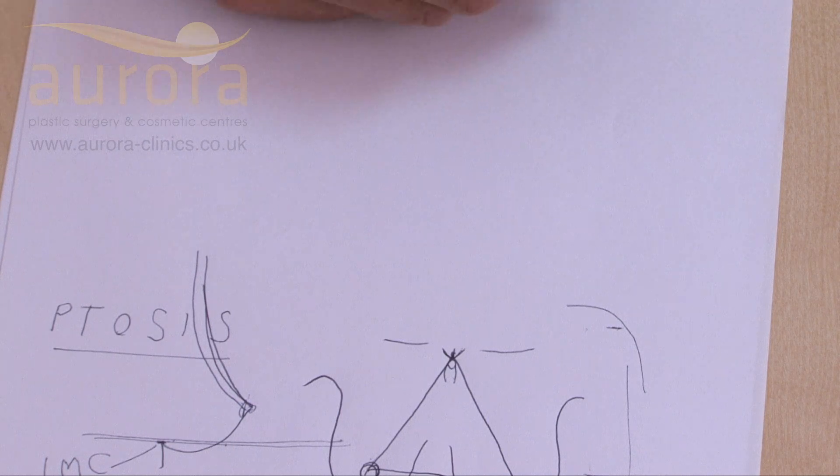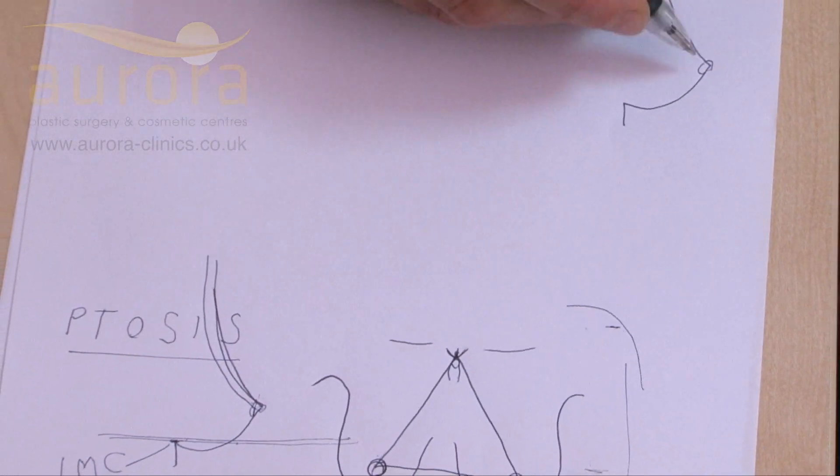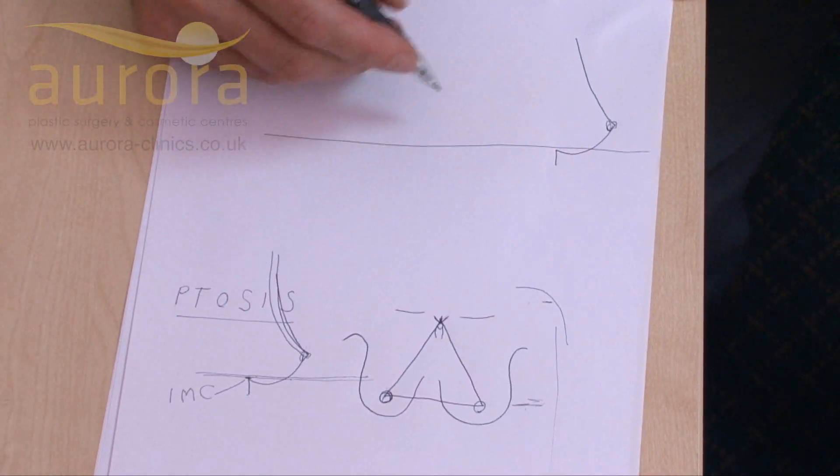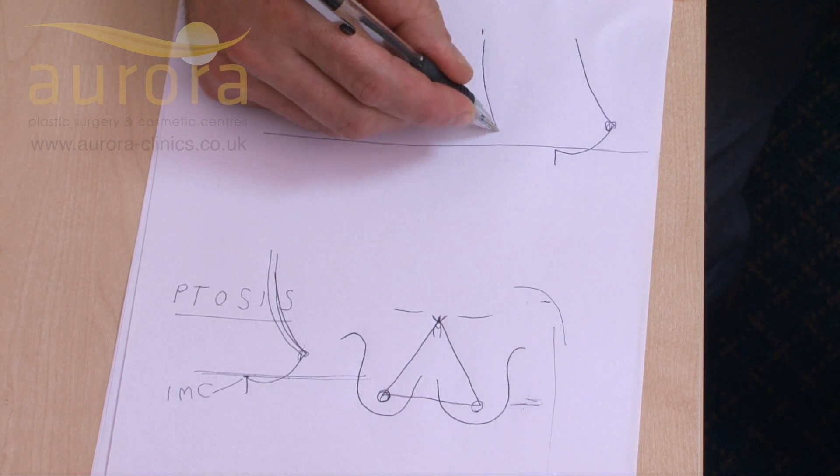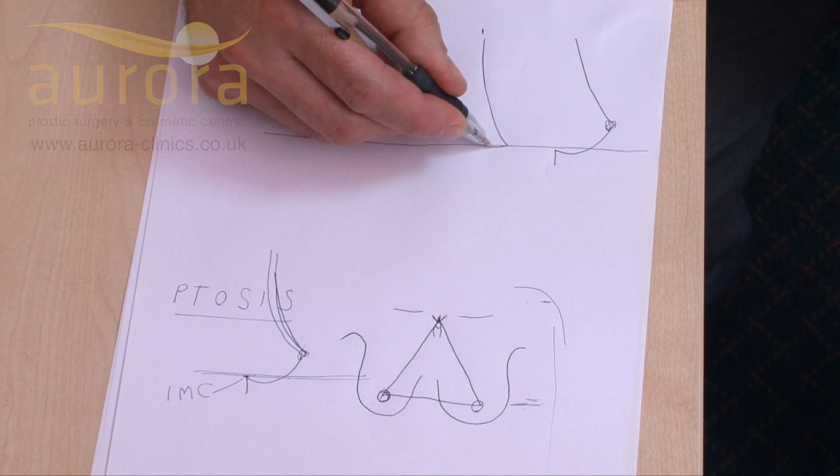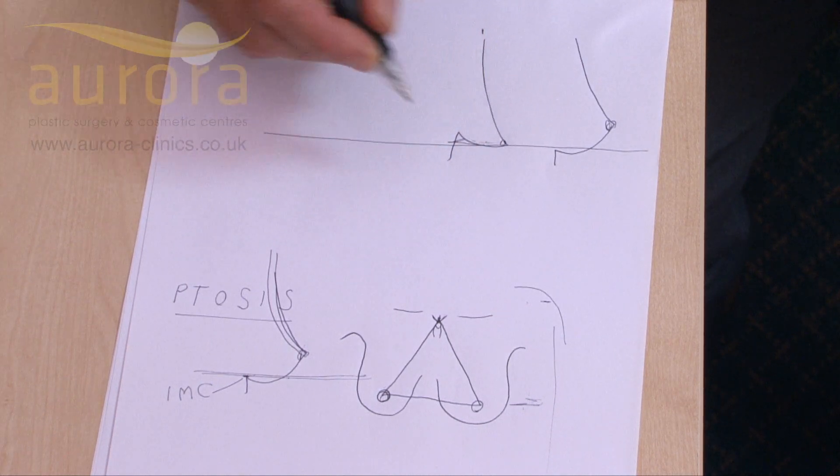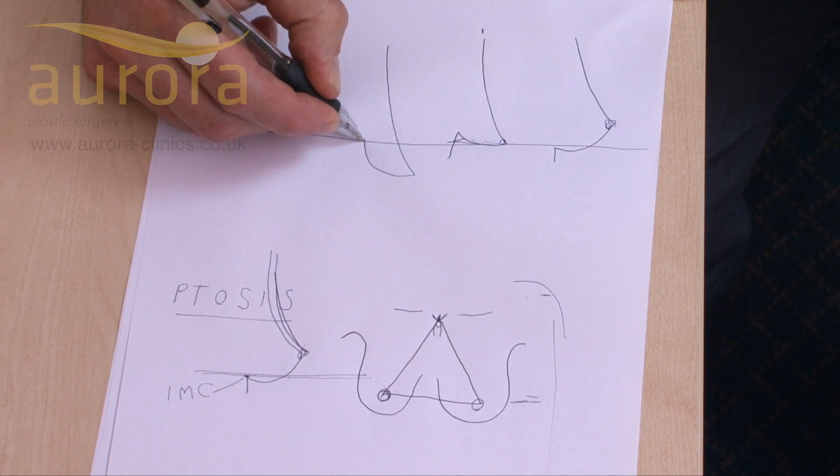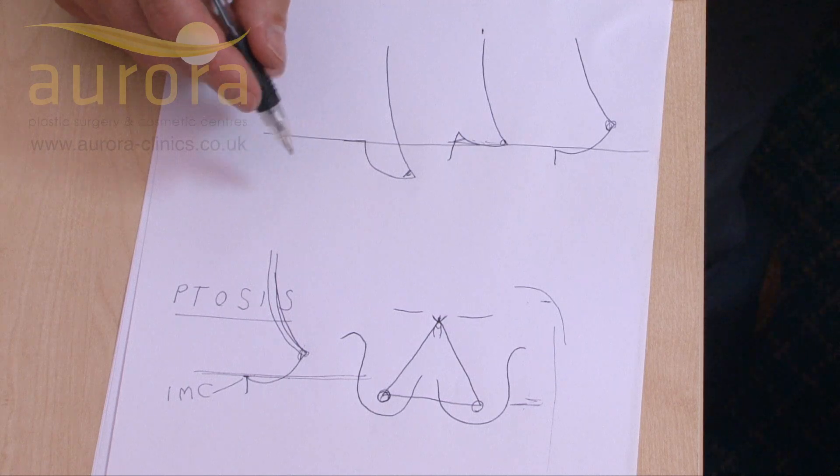So the ideal position, nipple lying above the fold. We just draw the fold here. Next position is nipple lying at the fold. And finally, nipple is an exaggeration lying below the fold.